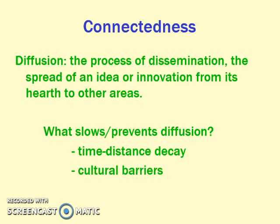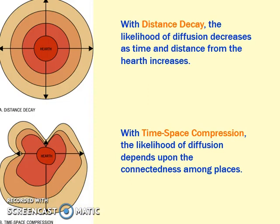Diffusion also relates to culture and how connected we are based on our relationships with others, and how culture traits spread to different parts of the world. A long time ago it was very difficult for culture traits to spread because of distance. But now we have time-space compression, where distance doesn't matter as much because of high-tech technology, high levels of communication, and media access — time and space have been compressed so that a hearth can be thousands of miles away from where something is diffusing, yet diffusion happens very quickly.